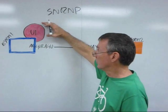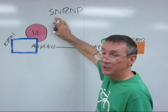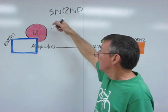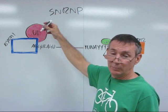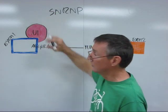At the other end, at the donor site, what binds is the U1 snRNP. The snRNP is a small nuclear ribonucleoprotein, as it sounds. That's a combination of a protein molecule and a small RNA. The U1 snRNP binds at the donor site.